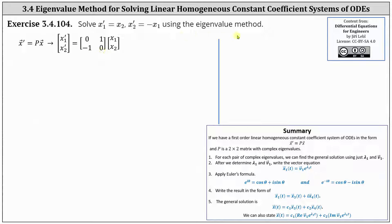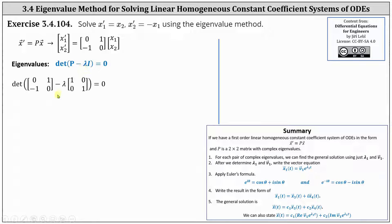To use the eigenvalue method, the next step is to determine the eigenvalues of matrix P. We do this by setting up the equation: the determinant of the difference of P and lambda I equals zero, and then solving for lambda. We have the determinant of (P minus lambda times the two-by-two identity matrix) equals zero.